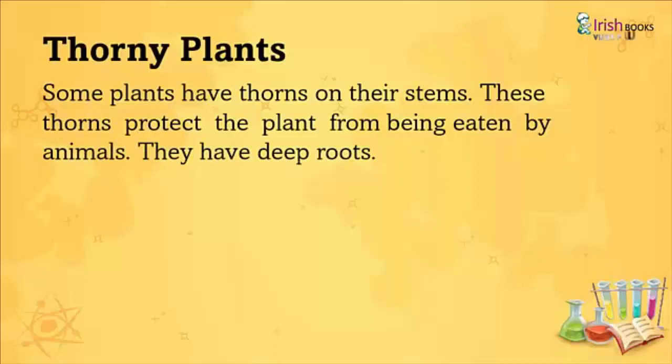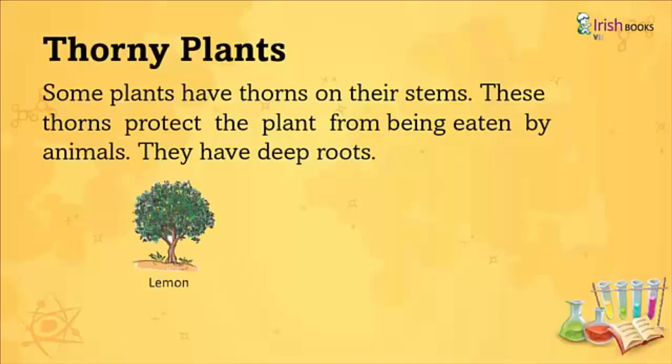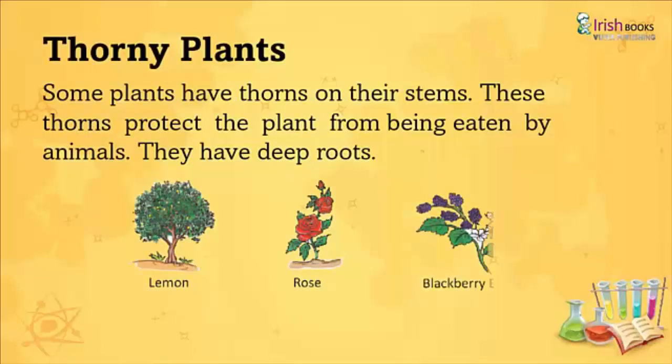Thorny Plants: Some plants have thorns on their stems. These thorns protect the plant from being eaten by animals. They have deep roots. Examples include lemon, rose and blackberry bush.